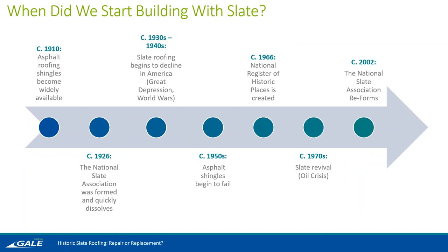In the early 1900s, around 1910, the first asphalt roofing shingles became available and started to compete with slate in the roofing market. Then in 1926, we see the formation of the National Slate Association, but this association quickly dissolved due to a lack of organization and cohesion in the industry. In the 30s and 40s, slate starts to decline in America due to the Great Depression and World Wars — obviously less emphasis on new building construction and even maintenance.